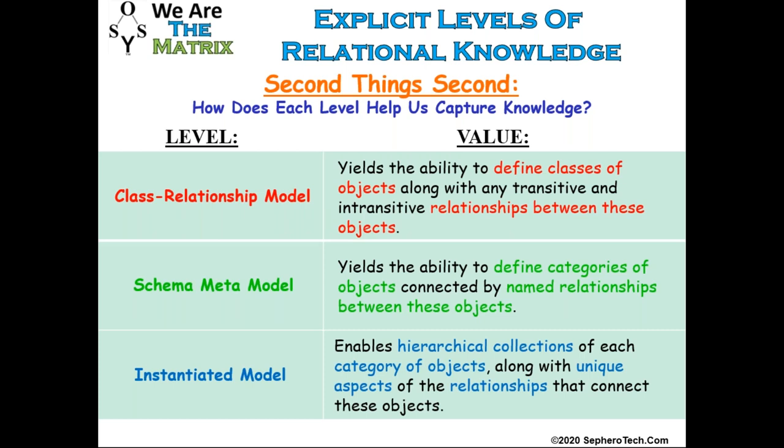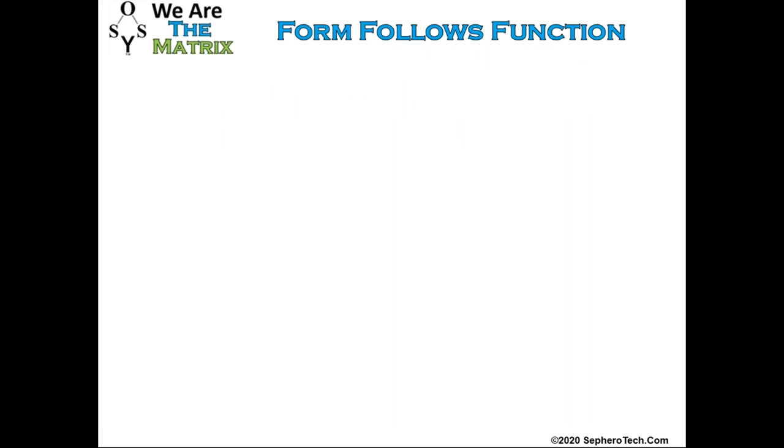In the instantiated model, we enable hierarchical collections. Hierarchical relationships are one set of relationships between objects, and hierarchies of knowledge are very prevalent in our work. In an instantiated model of components, a high-level system is composed of segments, segments composed of subsystems, subsystems composed of assemblies, all the way down to components. That hierarchy allows us to collect those hierarchical collections within a given modeling class, along with the unique aspects of the relationships connecting them. This is the value proposition of the three levels of knowledge modeling.